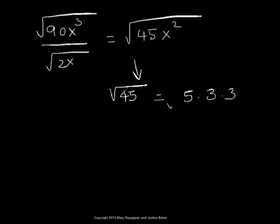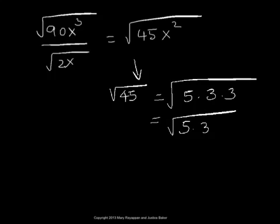So radical 45 would be radical 5 times 3 times 3, which is same as radical 5 times 3 squared. And that can be further written as radical 5 times radical 3 squared. Since it's a product of factors, we can break up the radical for each of the factors.